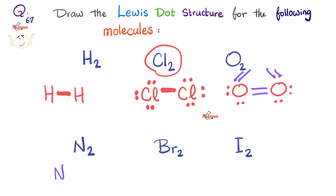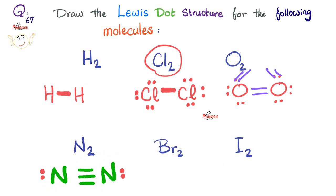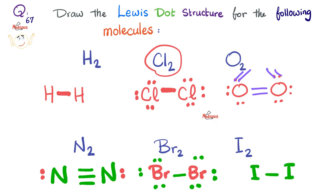For N₂, each nitrogen has five valence electrons and needs three more to be octet — so we form a triple bond. Count for each nitrogen: one through eight — both are octet. For Br₂, bromine is a halogen like chlorine, so only one single covalent bond is needed; add the lone pair electrons and both bromines are octet. For I₂, same approach as Cl₂ and Br₂ — single bond, add electrons, both are octet.